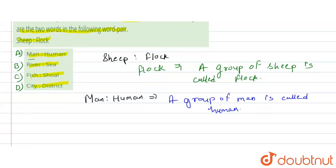Then, we have given river and sea. So, same as river and sea, a group of river is called sea.